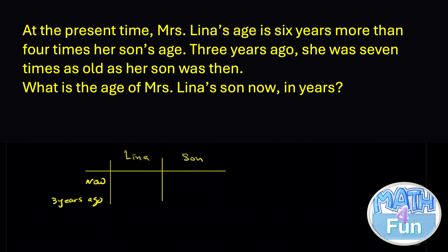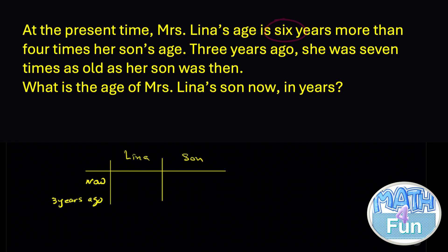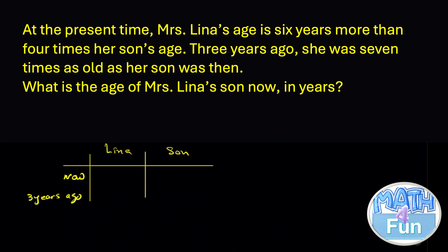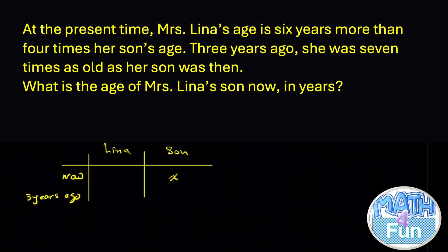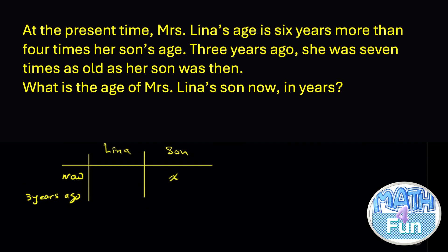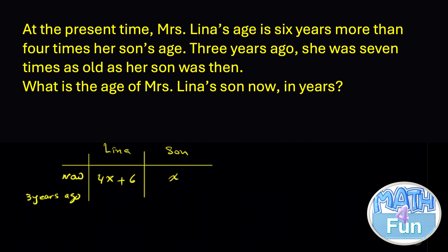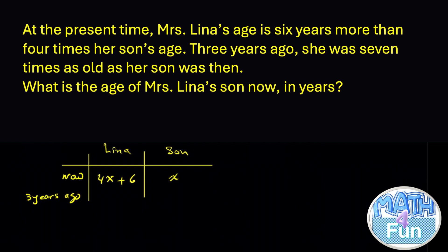Let the son's current age be x. Mrs. Lina's age is expressed in terms of the son: she is 6 years more than 4 times his age, so 4x + 6. Son's current age is x and Lina's current age is 4x + 6. This is the relationship between their present ages.